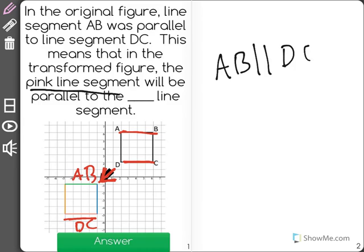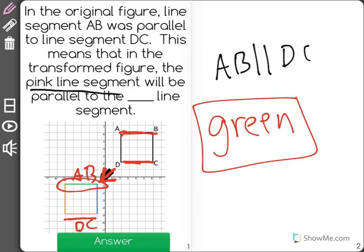Now parallel lines are taken to parallel lines in transformed figures. Meaning that if DC was parallel to AB, those same lines will be parallel in the new transformed shape. So the pink line would then be parallel to where line AB should be, which would be the green line segment at the top.